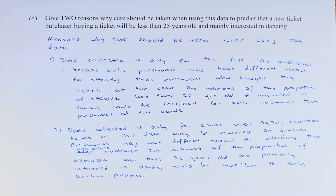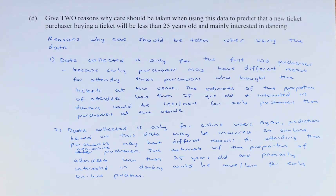Now we can answer the second point. The data collected is only for online users — the first 1,000 people are all online users. Making a prediction based on this data may be incorrect because online purchasers may have different reasons for attending than non-online or later purchasers. The estimate for the proportion of attendees less than 25 years old and those interested in dancing would be more or less for early online purchasers than those who will purchase the ticket later on.